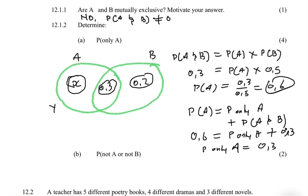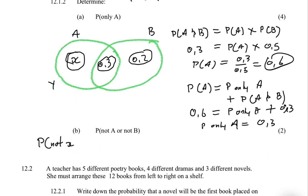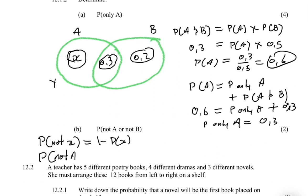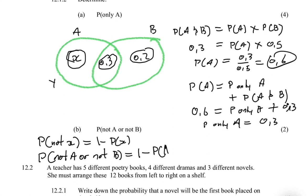Now we want the probability of not A or not B. The probability of the complement of an event equals 1 minus the probability of that event. So the probability of not A or not B equals 1 minus the probability of A and B. The probability of A and B is 0.3, so 1 minus 0.3 equals 0.7. The probability of not A or not B is 0.7.